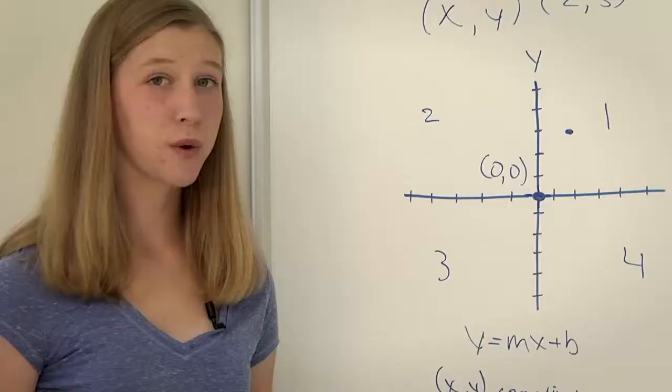If there is no number in the b-slot, then that means there is an implied zero, which means the line crosses the origin.